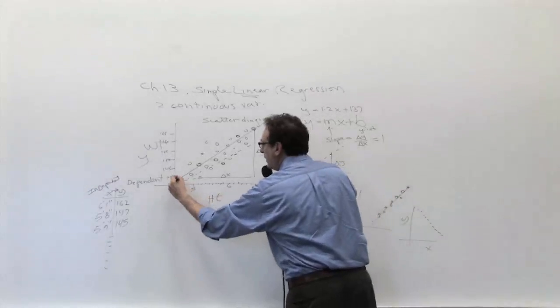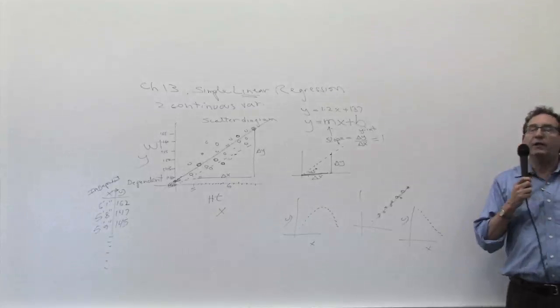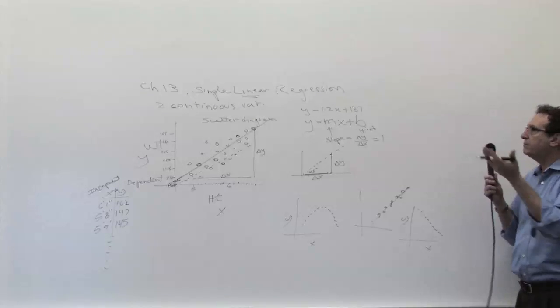So I'm saying the slope in this case. So I would say the equation of the straight line is y equals 1.2 times x plus 137. Of course, the intercept was at around 137. And I'm sure when I plug all these numbers into the computer, it can't be that far off because this is what it looks like.